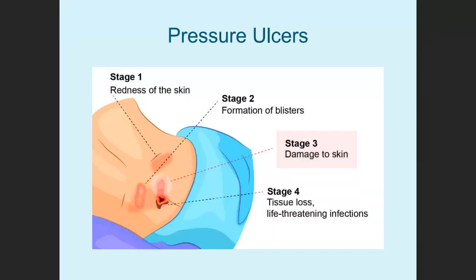Here is a presentation showing the different stages of ulcers. Stage one, the skin is red. Stage two, you start to get blisters. Stage three, you have actual damage to the skin. Stage four, you have tissue loss and often life-threatening infections.